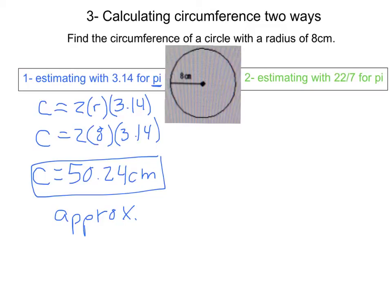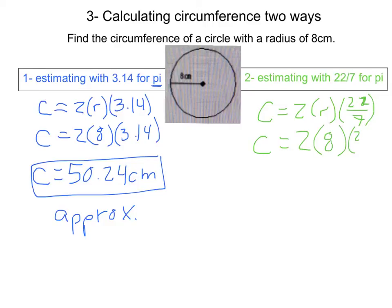If we want to be a little more exact, we can use the fraction form of pi on the right side and estimate pi as 22 sevenths. Writing our equation again — 2 times the radius times pi — we know we have a radius and not a diameter. Substituting our 8 centimeters and 22 sevenths, and putting the whole numbers over 1, we multiply the numerators together and the denominators together, and we get 352 sevenths centimeters.